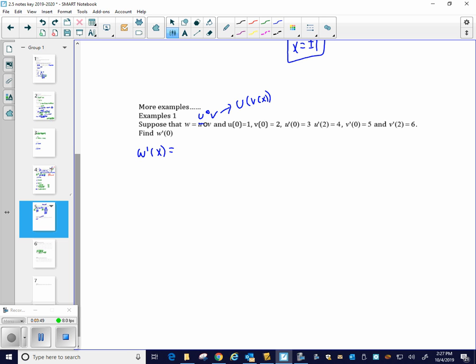What we know is that w is defined to be the composite of u and v. So if I want to find w prime of zero, the first thing I need is w prime of x in general. Well, this is w. So it's the derivative of the outside piece, u prime of v of x, times the derivative of the inside piece, v prime of x. And then we have values.